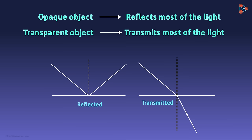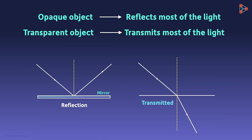Can you think of examples for these two? The surface of a mirror is shiny and opaque, and most of the light rays are reflected from it. On the other hand, glass is an example of a transparent object. It will transmit most of the light.